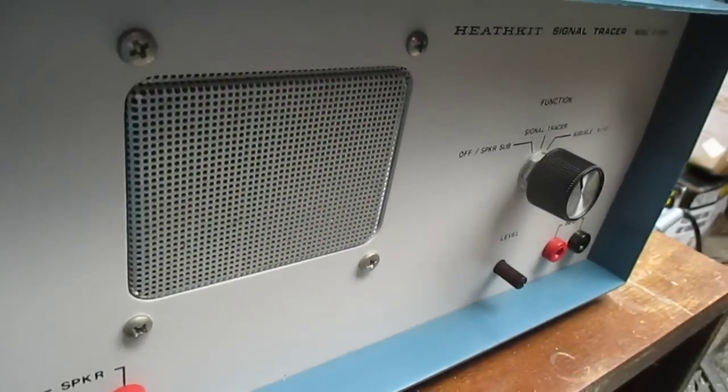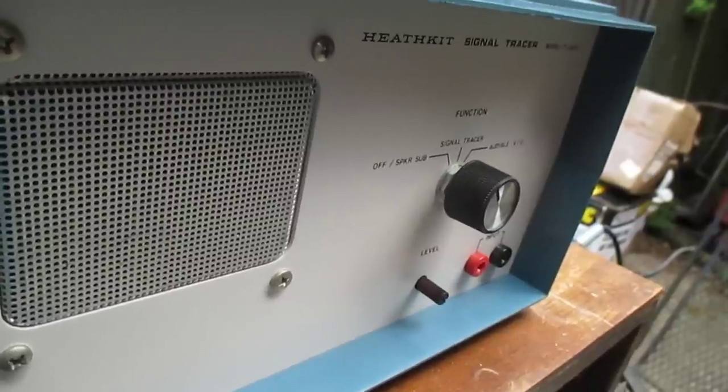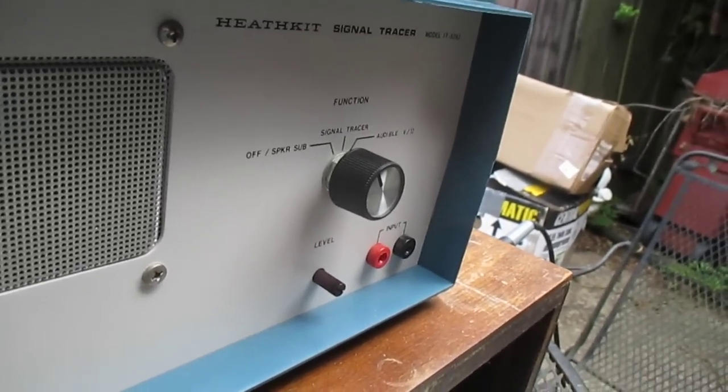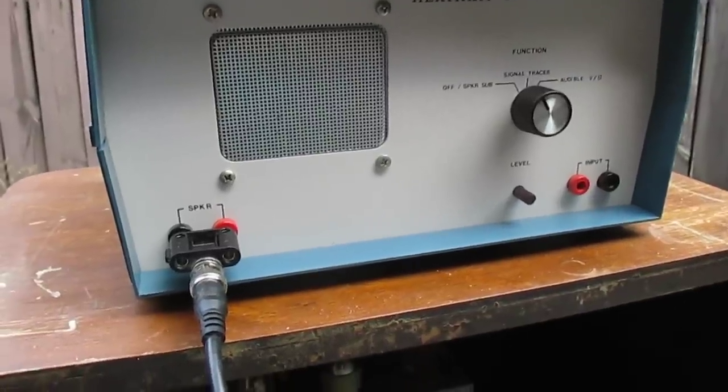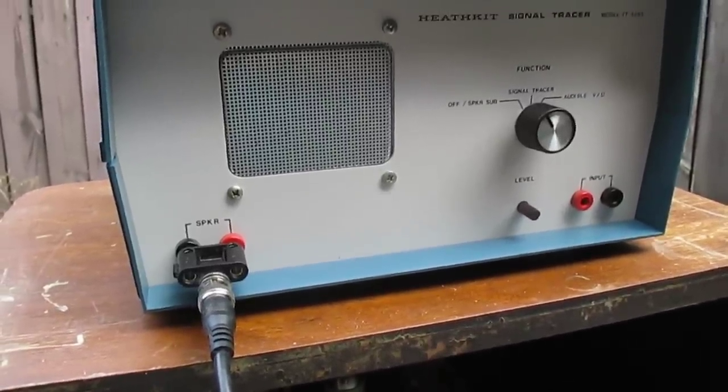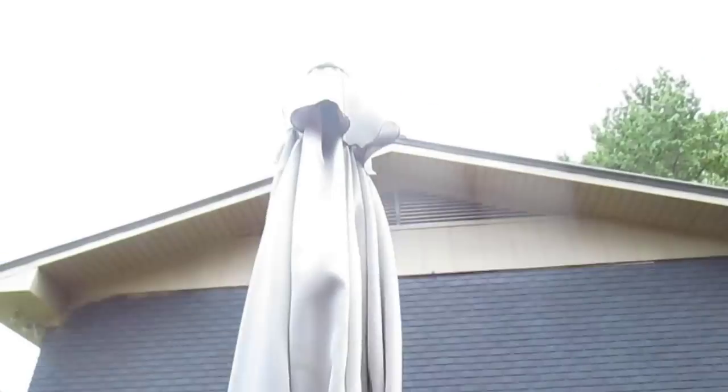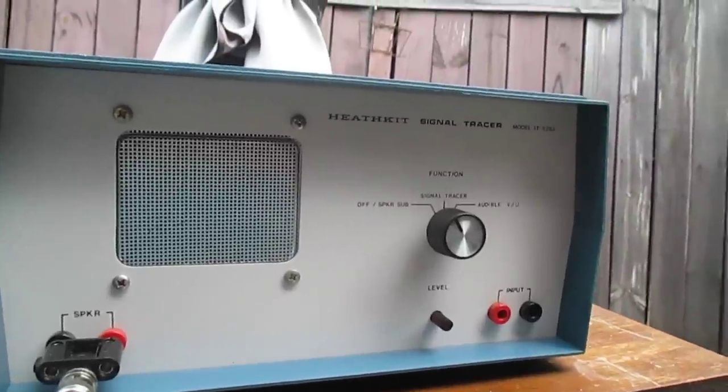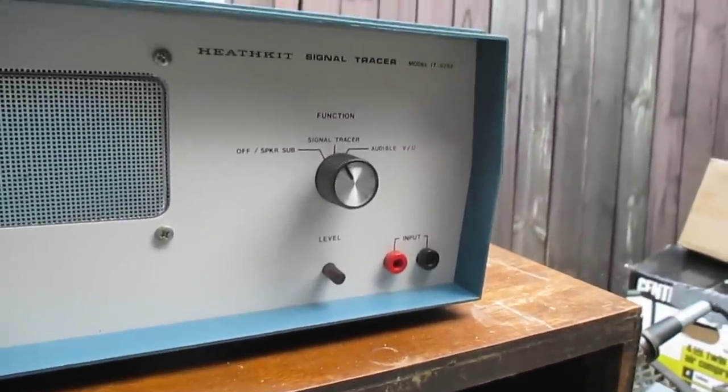As you can hear we have sound coming out of the signal tracer speaker. That's dependent on the radio's volume control. What I want to do is pull the chassis from the radio and do some signal tracing, but I think we better hold off on that because you can tell it's looking like the bottom's fixing to fall out and I don't want that to happen while I'm out here trying to work on this. So we're going to call it a day and let whatever the sky is going to do do its thing and then we'll get back into this.